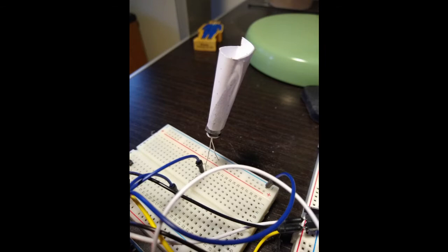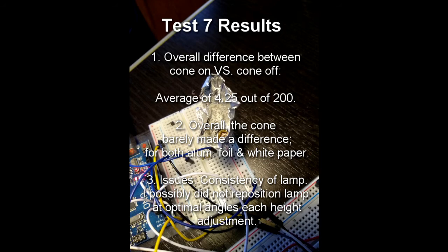So I analyzed the differences of values in the serial monitor between cone on and cone off. And the average was about 4.25 difference between each. I also tried using a white paper cone. And the same thing happened with the values. All right, so I thought upgrading to a aluminum foil cone would make a difference. And I tried to increase the diameter of the aluminum foil cone on the top. However, an average of 4.25 out of a max of 200 was recorded between cone on and cone off. So this suggests that overall the cone really did not make much of a difference when used with this lamp at different heights. Now there may have been some issues with the consistency of me raising the lamp and the angle. So keep that in mind. This is just kind of a suggestion.